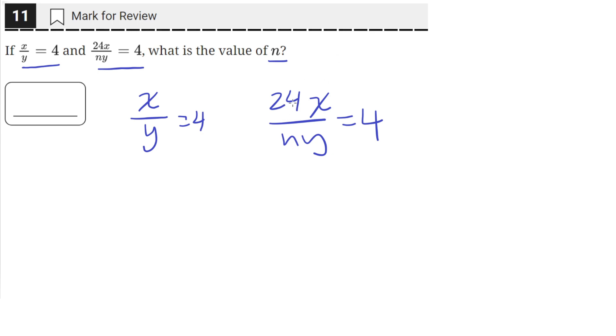Using the second equation, we can rewrite this as 24 over n multiplied with x over y. So I just took this x over y out and put them into two separate multiplying terms, and this will still be equal to 4.